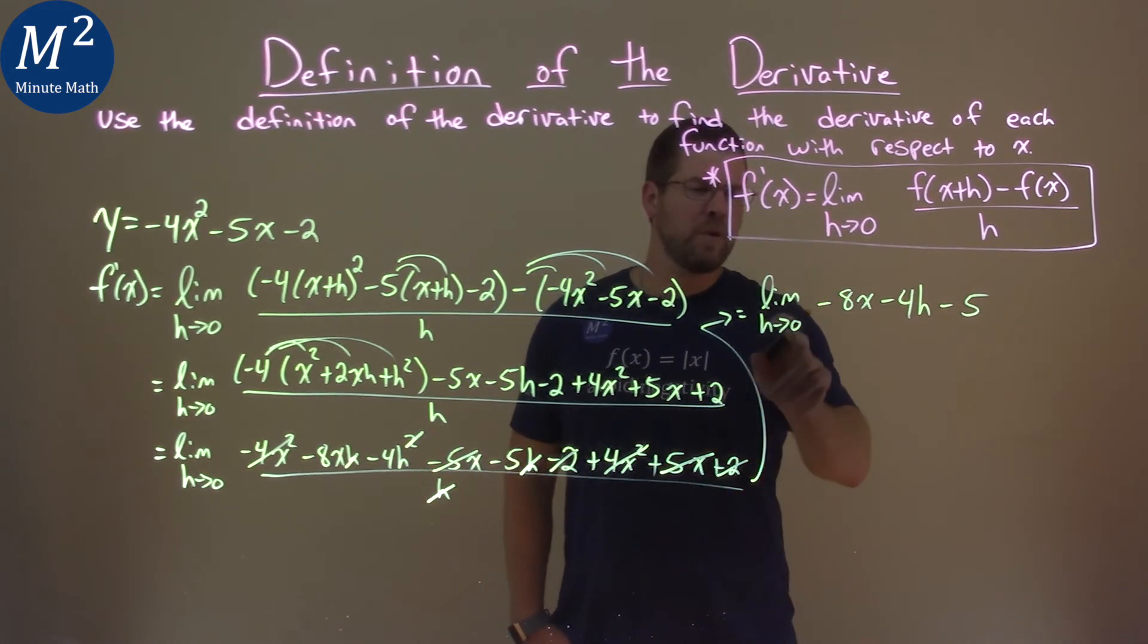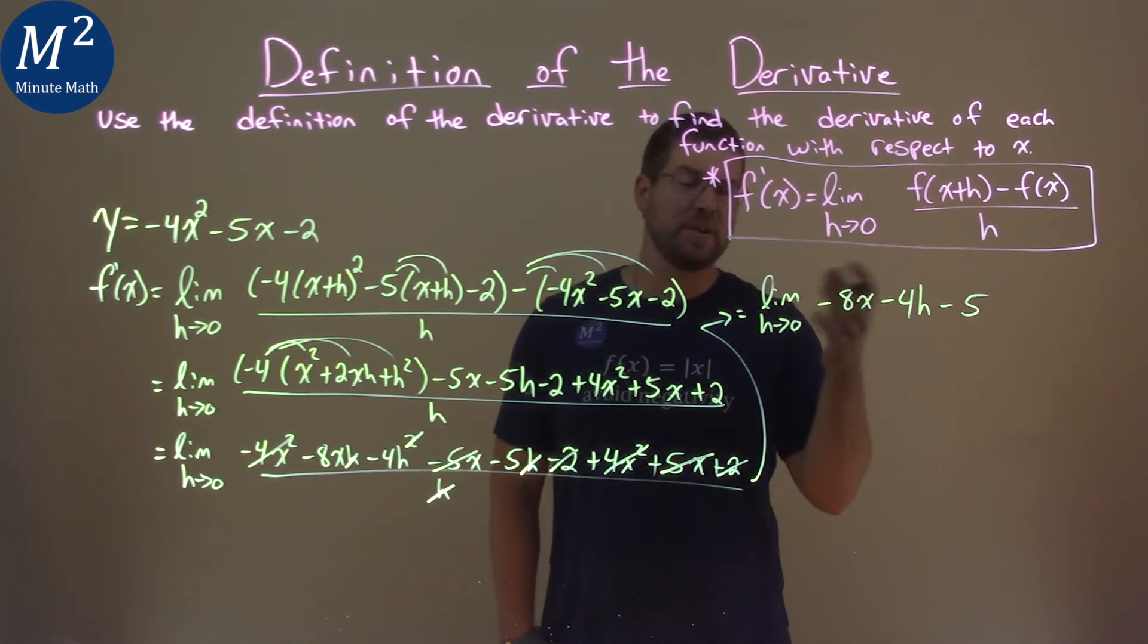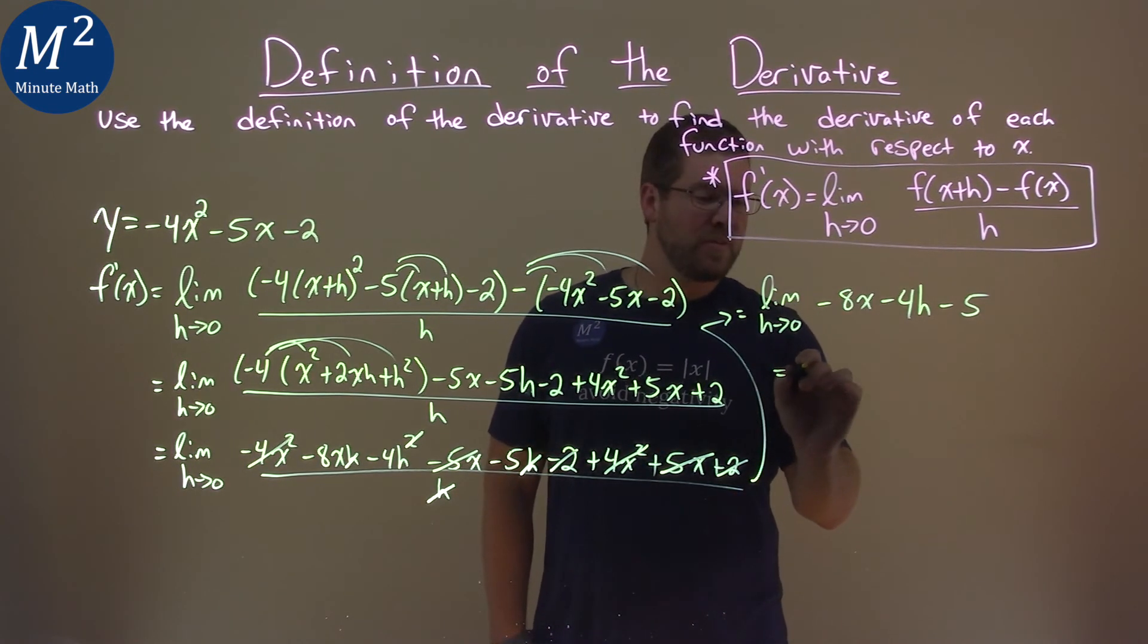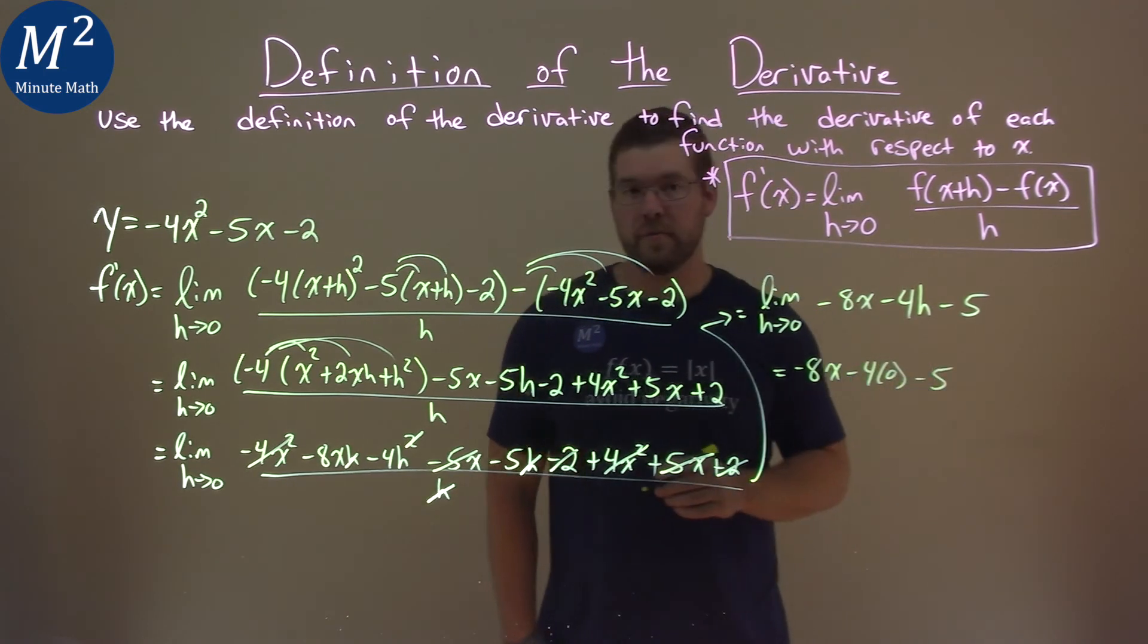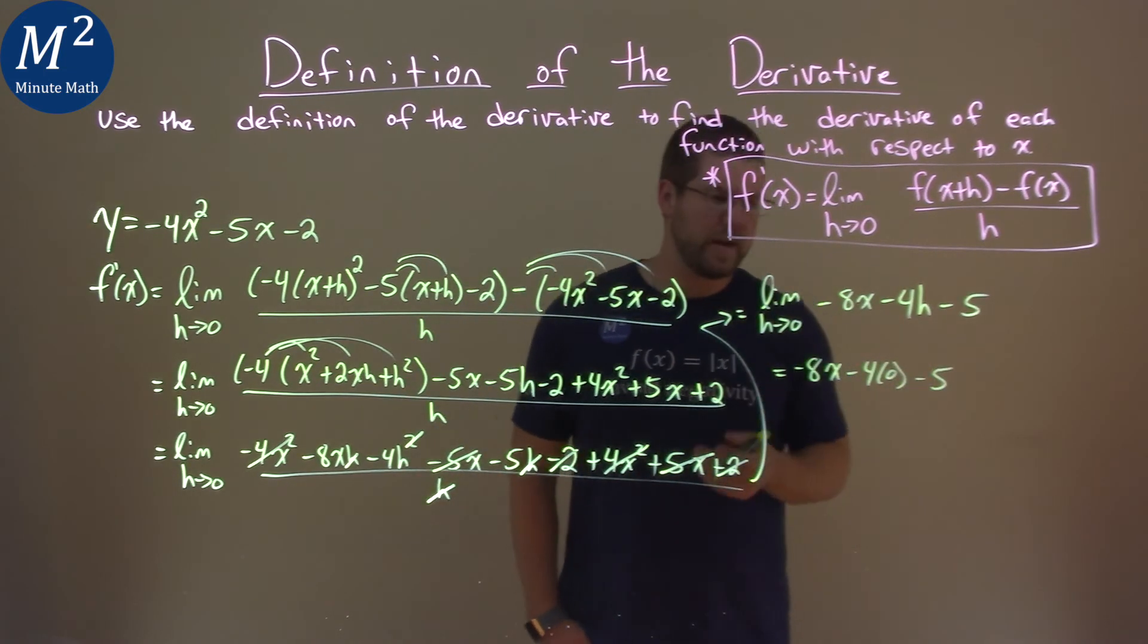Well, now we can take the limit. We can directly plug a 0 for h. In doing so, we have negative 8x minus 4 times 0 minus 5. Well, 4 times 0, you should know this by now, is 0.